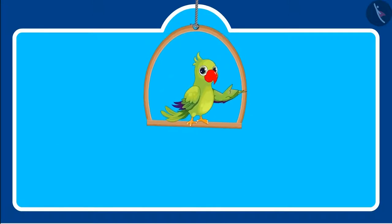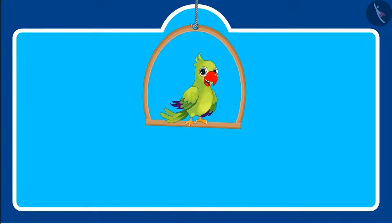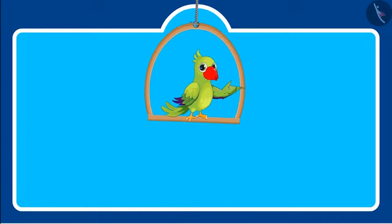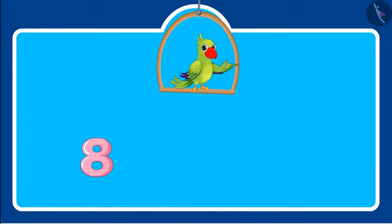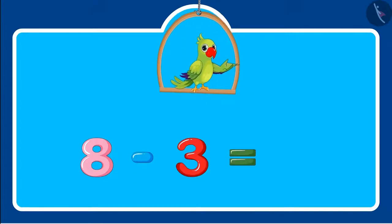So children, you saw that if we subtract three from eight then five is left. Can you write this in a systematic way? Yes, this is how we will write it: eight minus three equals five.